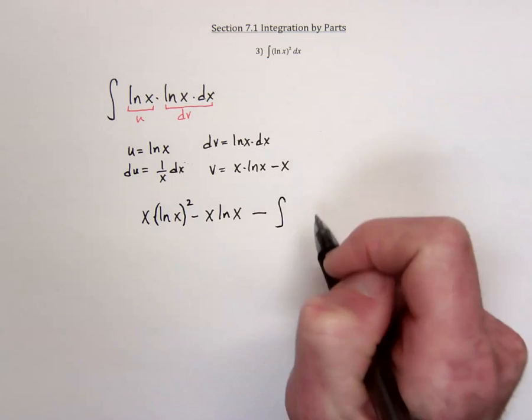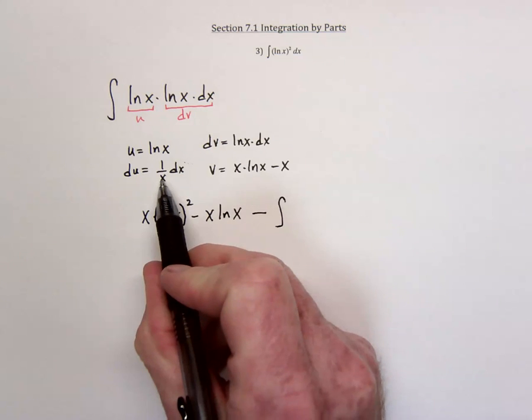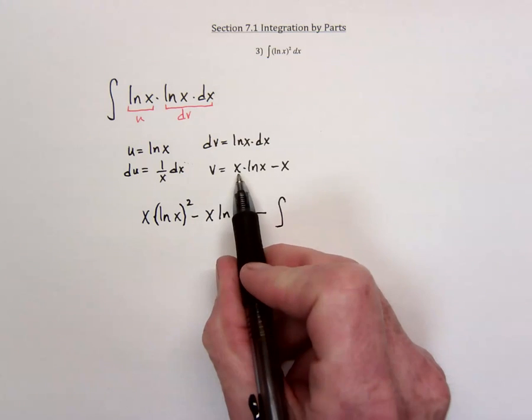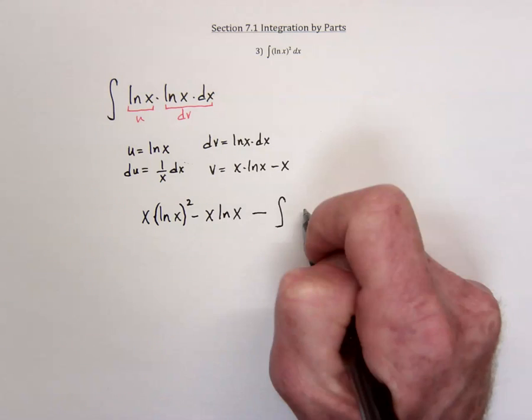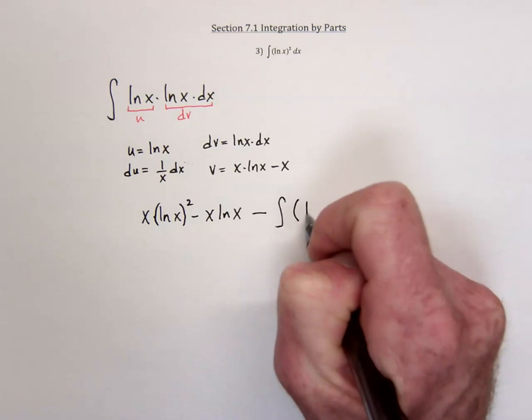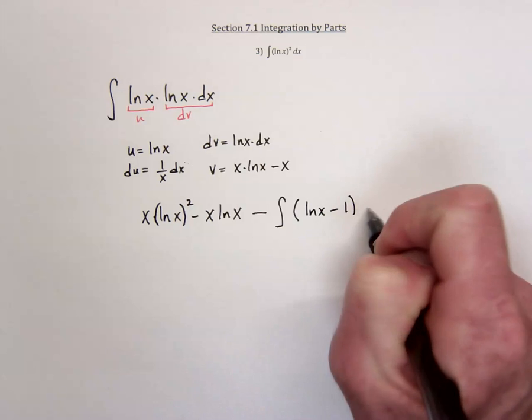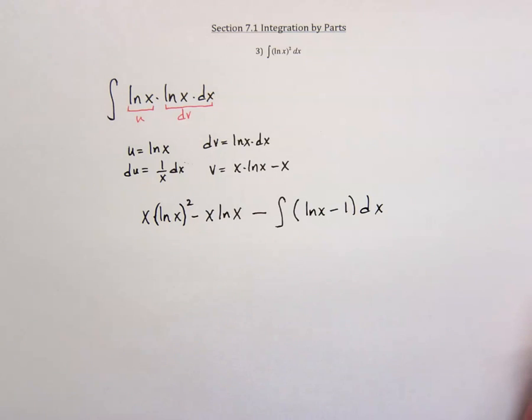And then the rest of the formula says integrate the v times du. So minus the integral, and distribute this over here and it's going to cancel that x and it's going to make this a minus 1. So then we need to integrate the natural log of x minus 1 with respect to x.